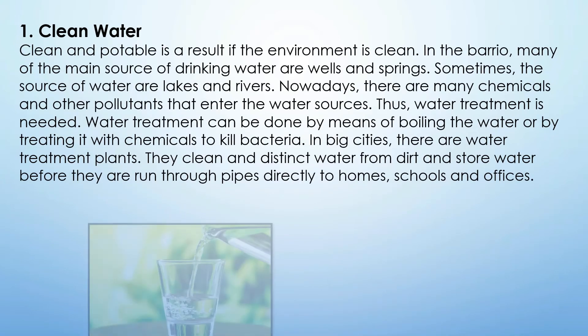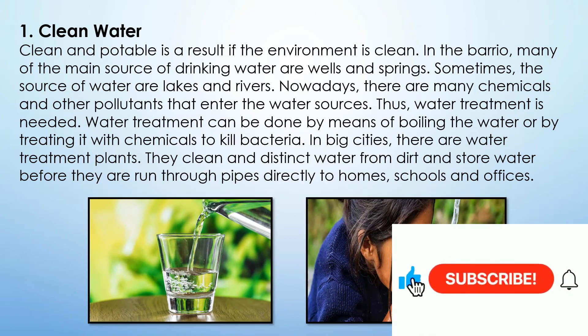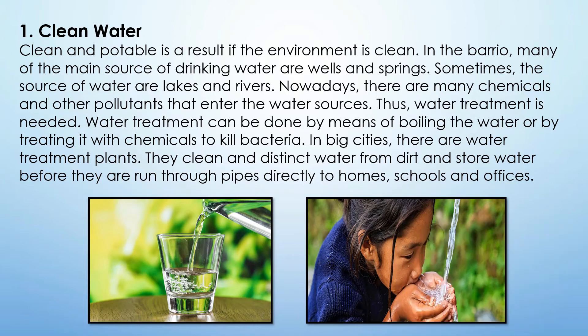Number one is clean water. Clean and potable water is a result of a clean environment. In the barrio, many of the main sources of drinking water are wells and springs; sometimes the sources are lakes and rivers. Nowadays there are many chemicals and pollutants that enter water sources, so water treatment is needed — by boiling or treating with chemicals to kill bacteria. In big cities there are water treatment plants that clean water and distribute it through pipes directly to homes, schools, and offices.